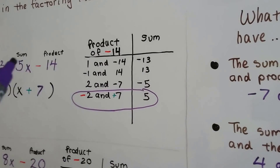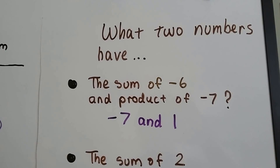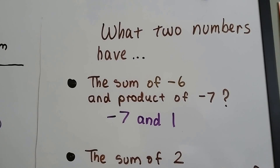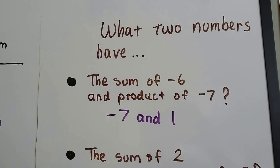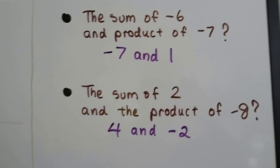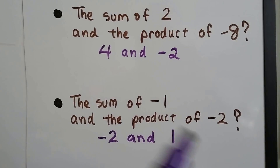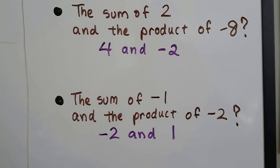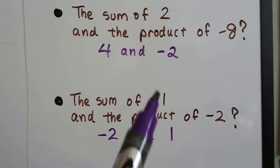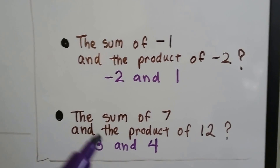Let's make sure you understand. We're trying to find two numbers with the product of the constant and the sum of the middle term. What two numbers have the sum of negative 6 and the product of negative 7? It's negative 7 and 1 — negative 7 plus 1 is negative 6, and negative 7 times 1 is negative 7. The sum of 2 and the product of negative 8: 4 and negative 2 gives a positive 2 and negative 8. The sum of negative 1 and the product of negative 2: negative 2 and 1. And the sum of 7 and the product of 12: 3 and 4, since 3 plus 4 is 7 and 3 times 4 is 12.